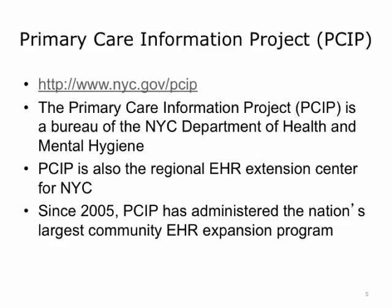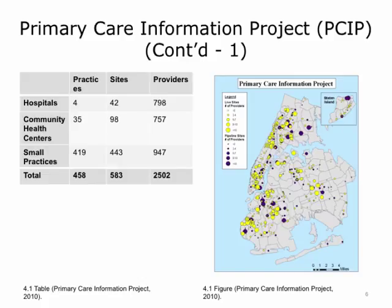Here is a map of the five boroughs of the New York City area. We currently have over 2,500 providers that have implemented an electronic health record through our organization or are in the pipeline to do so. The EHR sites are scattered throughout all of the New York City area, with practices coming in all different shapes and sizes — from single provider sites and small practices up to multi-site community health centers with more than 10 providers.